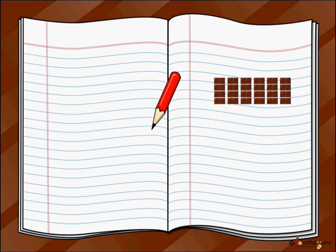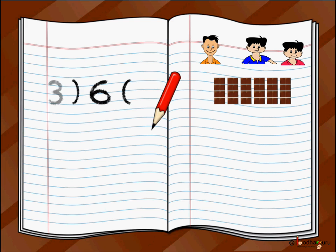We do it like this: six. We put a left bracket before six and a right bracket symbol after six. It means we are going to divide six, and as we have to divide six by three, we put three before the left bracket.